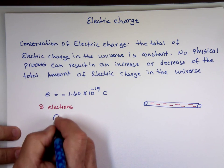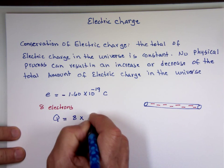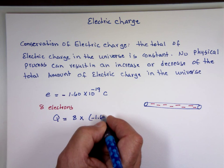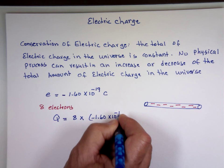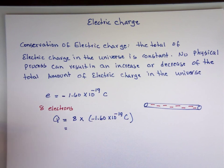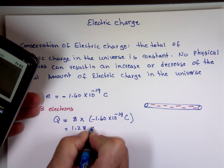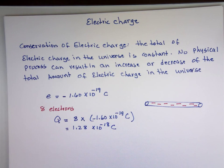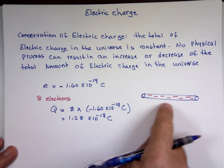And the charge for that we call Q is going to equal 8 times negative 1.6 times 10 to the negative 19. 8 times 1.6 times 10 to the negative 19. And the value is 1.28 times 10 to the negative 18 Coulomb. So if I take an amber and rub it against the towel there, and I free 8 electrons.